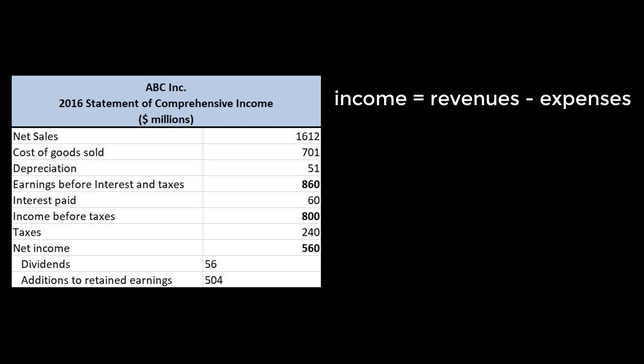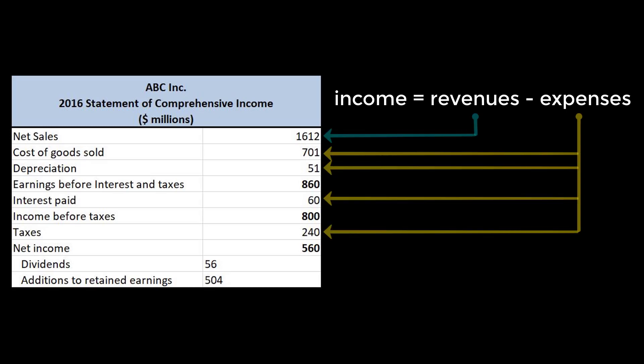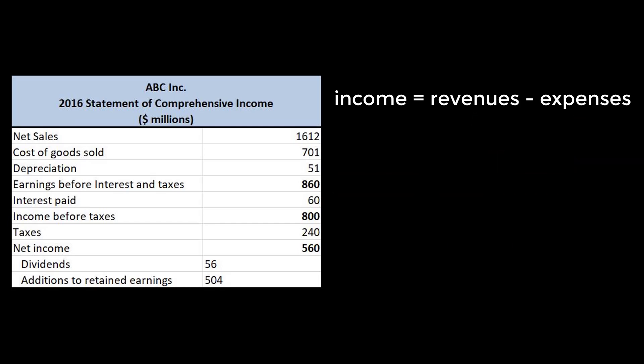The revenue is represented by net sales. Everything below is an expense, such as cost of goods sold, which accounts for things such as materials and labor, and depreciation, which are amounts we deduct from net sales. We are then left with earnings before interest and taxes, shortened to EBIT, which is an intermediate value useful for calculations that we'll discuss later.